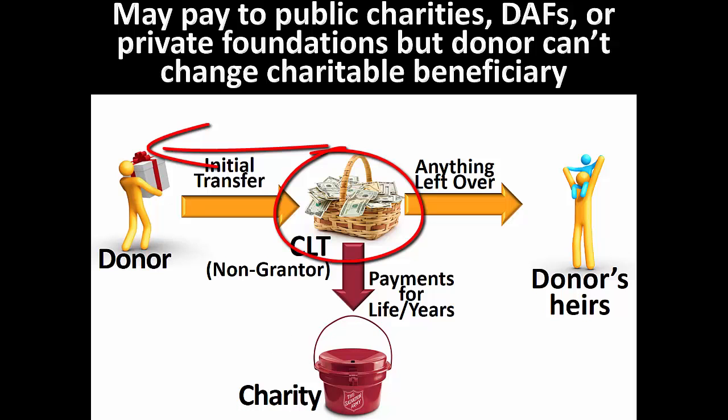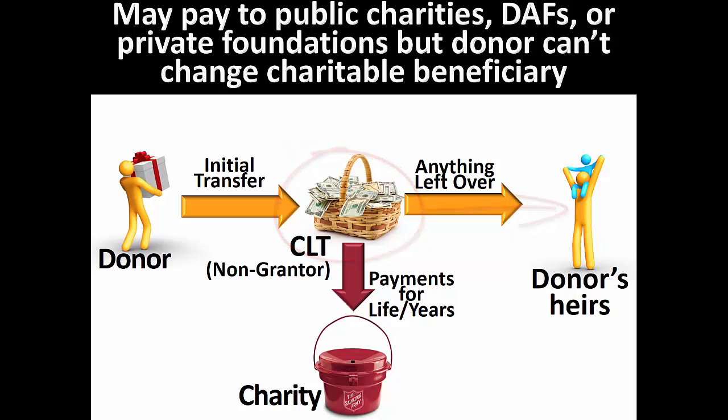In contrast, the charitable lead trust passes its assets to non-charitable beneficiaries at termination. Thus, inclusion of the charitable lead trust assets in the donor's estate at death can result in estate taxation. Although the donor may not have this power, it is acceptable for the donor's spouse or some other family member to have the power to change charitable beneficiaries. Because it is not the donor who holds the power, this will not result in the trust assets being included in the donor's estate.